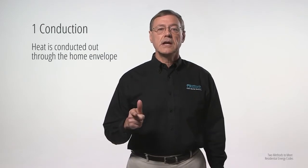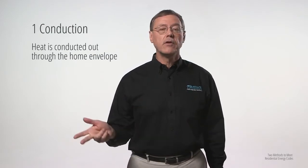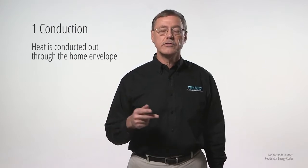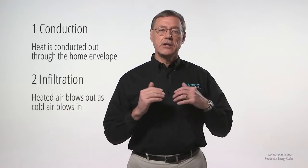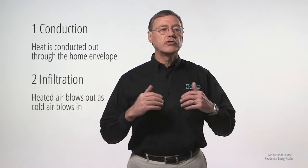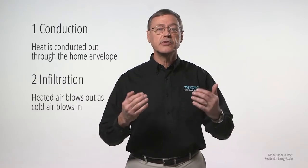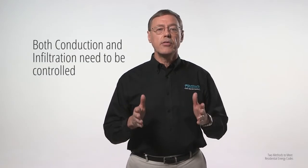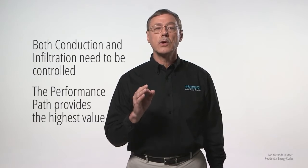Energy codes are aimed at limiting energy use or loss. Home heating energy is lost in two principal ways. First, by conduction — heat is conducted out through the home envelope in the wintertime, or the reverse in the summertime with air conditioning. The second is by air infiltration: heated or cooled air blows out as exterior air comes in to replace it. Both of these need controlling. The performance path provides the highest value way to meet these requirements.